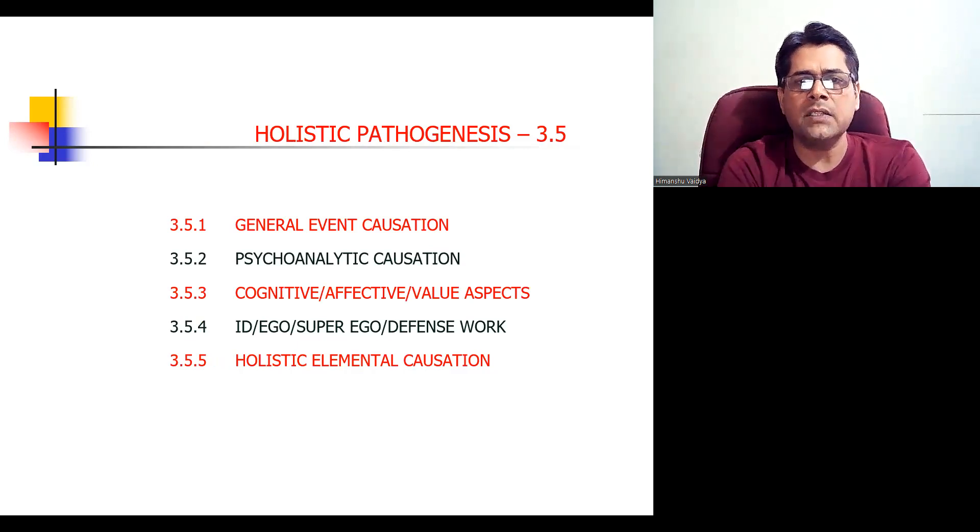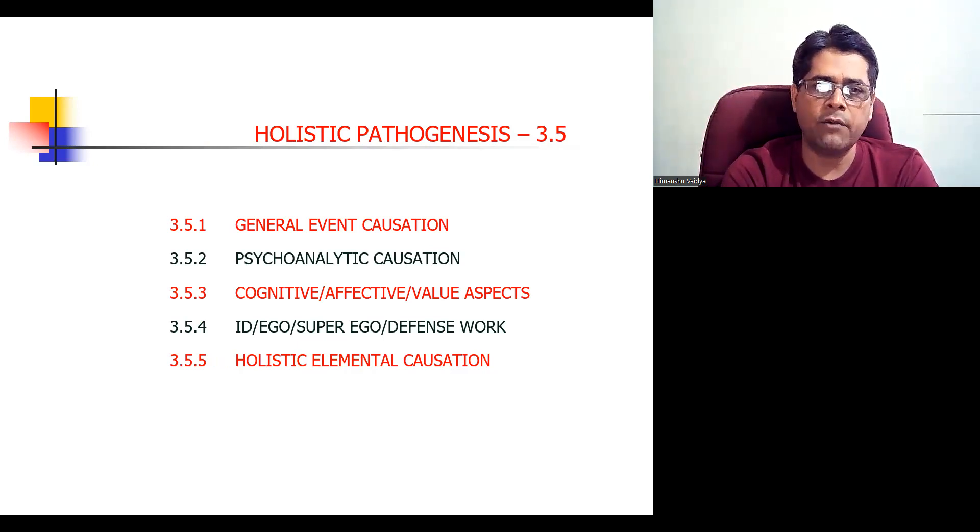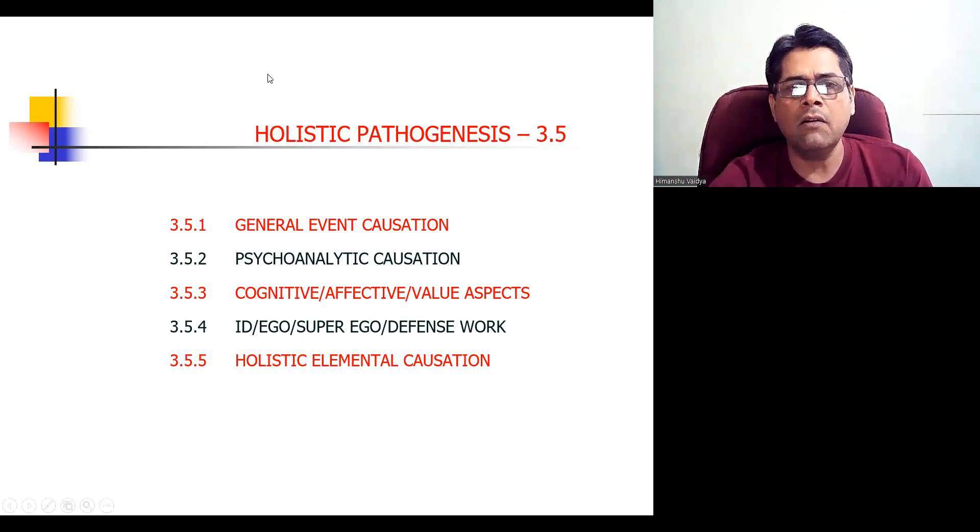So after all of this, the holistic pathogenesis comes about. We write down the holistic HEAT pathogenesis in these five elements. We take into account general event causation, psychoanalytic position, cognitive affective value aspects, the ego superego defense work aspects, and as a result of it we put down the holistic elemental position. We describe the full pathogenesis in five points.